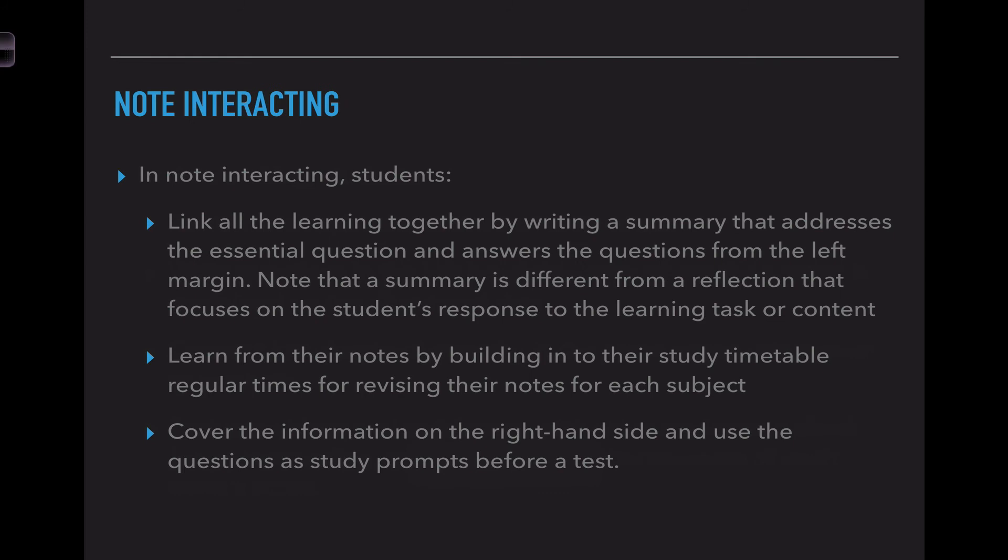In note interacting, you're going to link all of the learning together by writing your summary. You're going to attempt to address the essential question or refocus on the topic that the content was over. Make sure you know that the summary should be different from a reflection. The reflection focuses on your response to the learning. A summary just states back what you should have learned. When you do this summarizing or note interacting, this should be built into your time. You don't want to do this all at the end of the unit. You want to be doing it as you go, so you make sure you're understanding the key topics as you go through the sections.